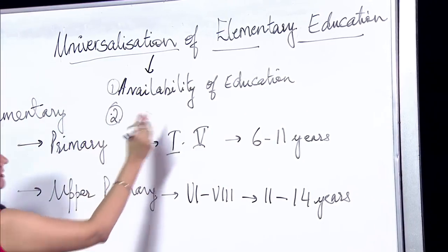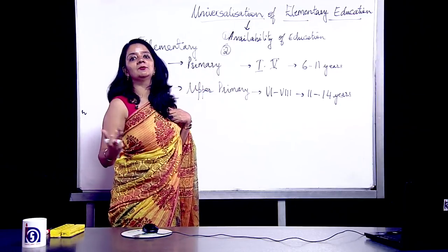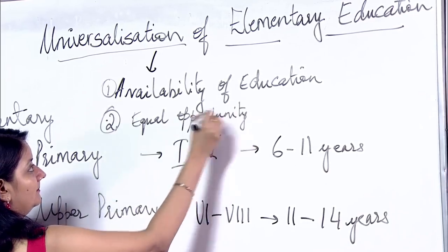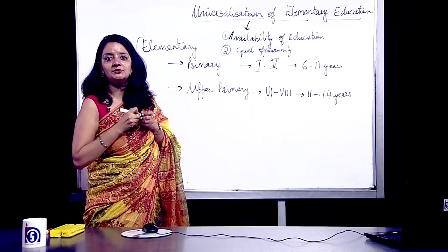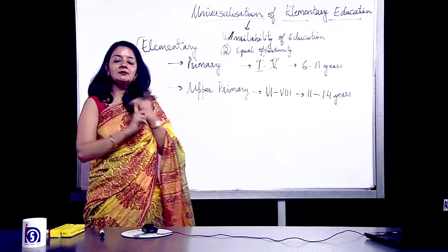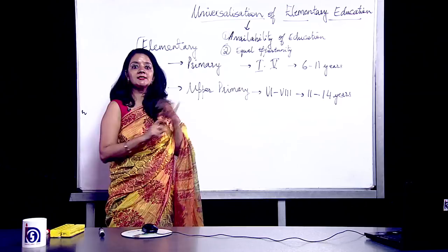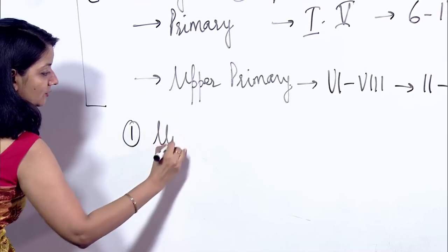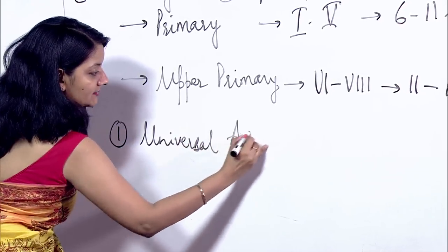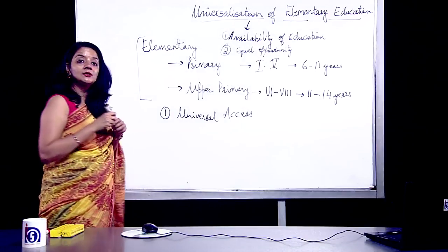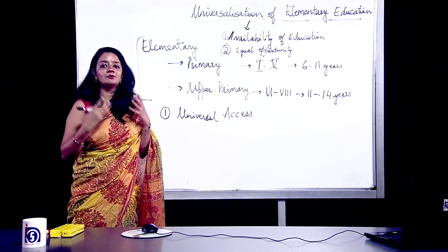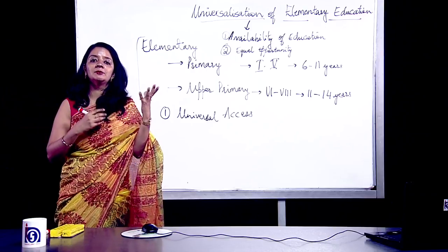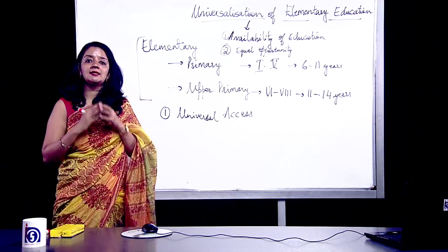Universalization of education involves two key things: availability of education and equal opportunity for everyone. This can be further broken down into four components. The first is universal access — every child gets the benefit of education wherever they are. Whether a child is staying in a remote area of Bihar or Jammu and Kashmir, the school is available and education is accessible. Nobody can deny a child education.